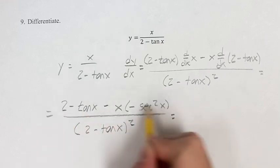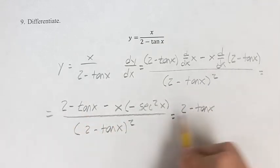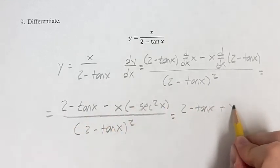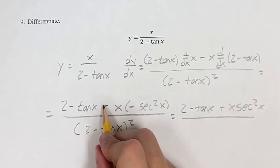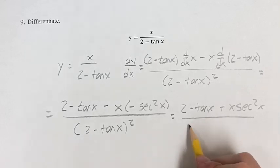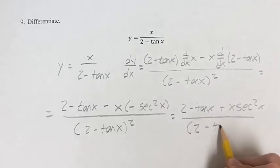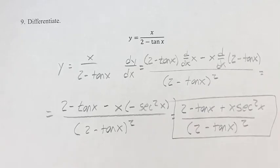plus x secant squared x, right, negative times the negative is positive, and this is over 2 minus tangent x squared.